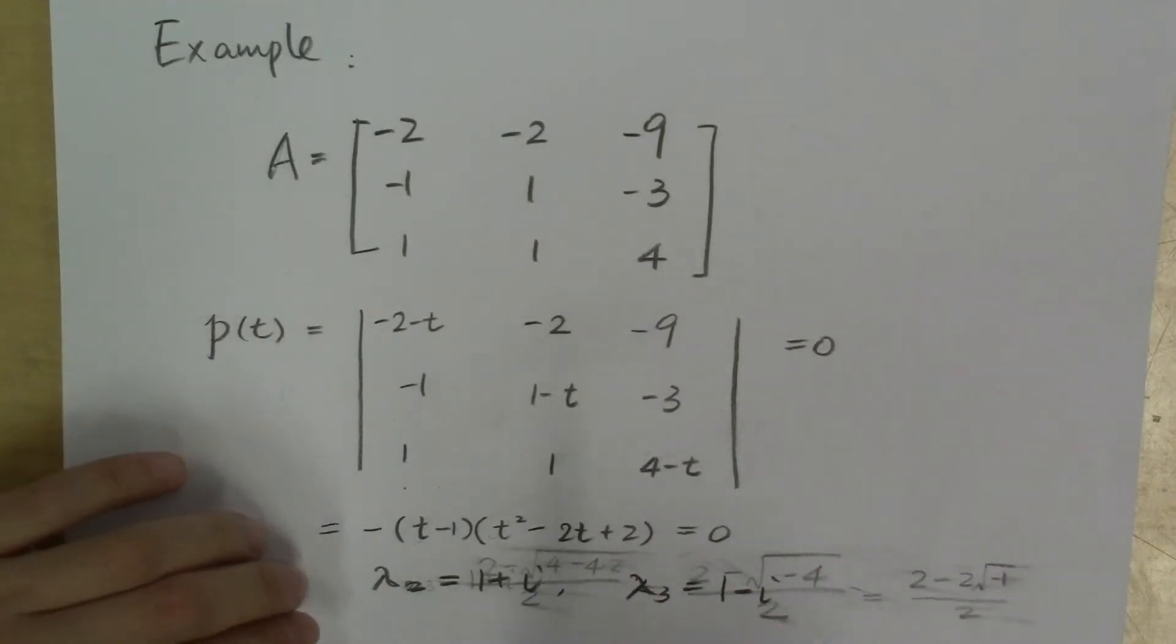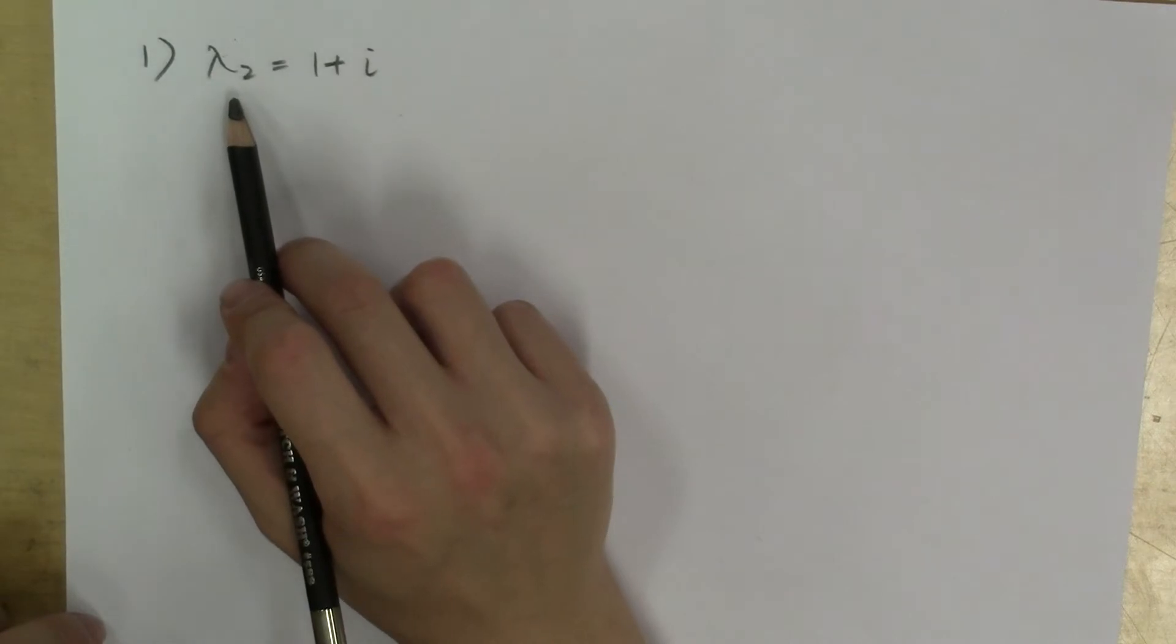And in the following, I will be focusing on finding the eigenvectors for this pair of complex eigenvalues. Let's first look at lambda sub 2. How do we find the eigenvectors corresponding to an eigenvalue?